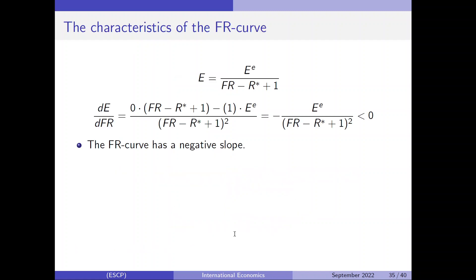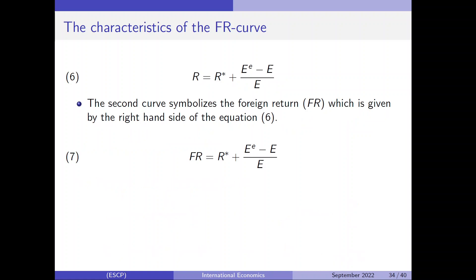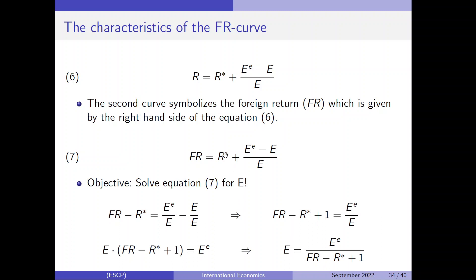We are solving equation 7 for the exchange rate E because then it is easy to compute DE/DFR. In the first step, we put R* on the other side of the equation so that it pops up with a negative sign. Furthermore, we split up this fraction into two fractions: the expected exchange rate over E, minus E over E. The minus E over E is nothing else than minus 1. When we put this minus 1 on the left-hand side, it pops up with a positive sign. In the next step, we multiply through by the exchange rate, and when we divide by the term in brackets, we have isolated E on the left-hand side of the equation.